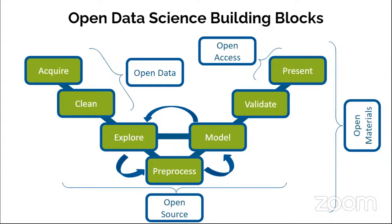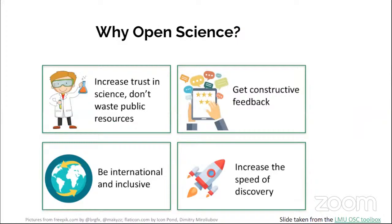So what does this have to do with open science? Well, all of these building blocks contain things relevant for open science — in this case, open data science. When we speak about data, we want to speak about open data. When we speak about the analysis, we're using code, so we want to talk about open source code. When we present our results, we can talk about open access — for example, to the paper. And there are many other things involved, which I'm summarizing using the term open materials.